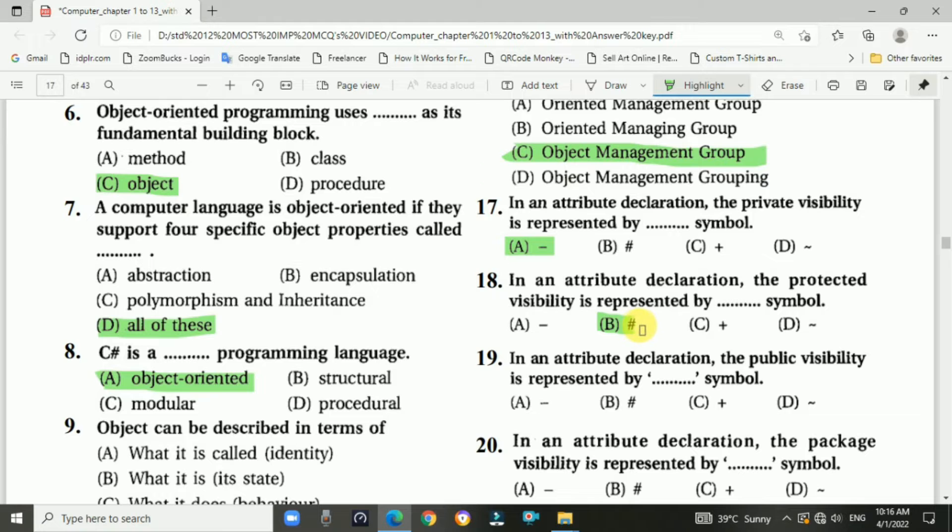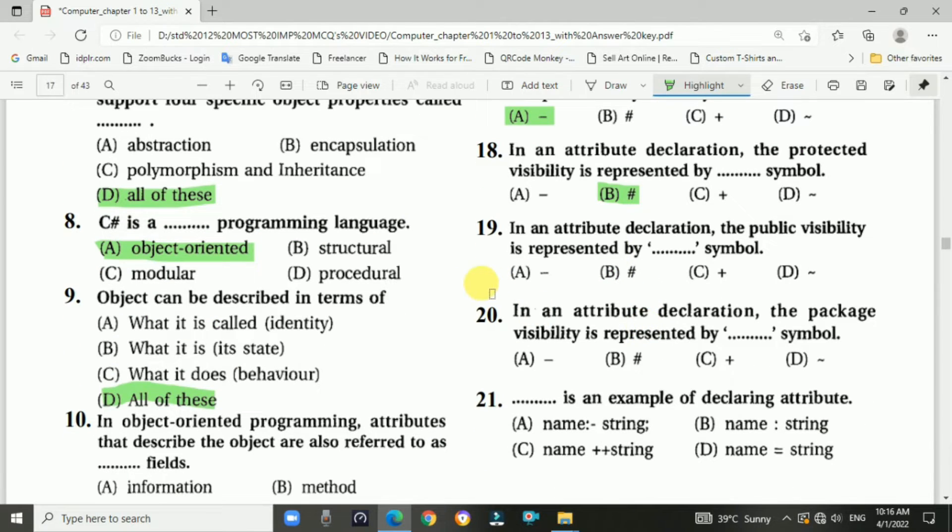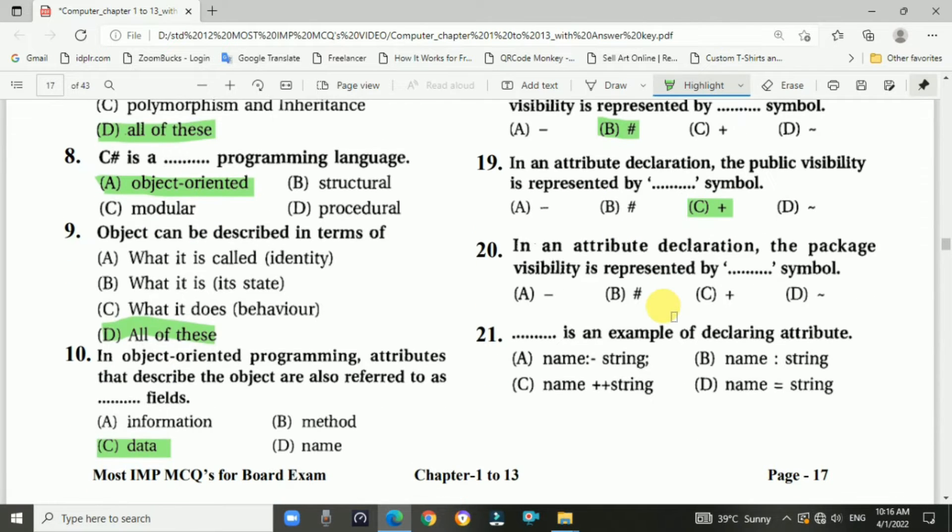Question number nineteen: In an attribute declaration, the public visibility is represented by blank symbol. Answer is plus. Question number twenty: In attribute declarations, the package visibility is represented by using blank symbol. Answer is D, tilde symbol.